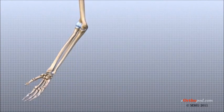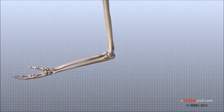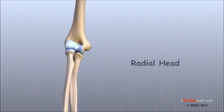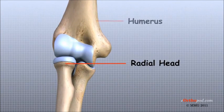The elbow itself is essentially a hinge joint, meaning it bends and straightens like a hinge. But there is a second joint where the end of the radius or the radial head meets the humerus.